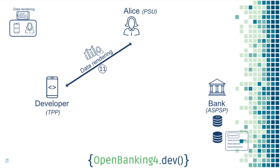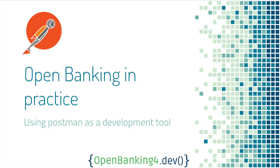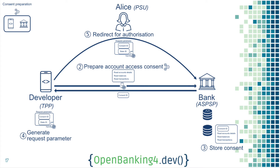Once you've got the data, you can do whatever you like — for example, data rendering like an aggregator, or any innovative idea that may not even involve presenting the data to Alice. Let's now see how it works with 4DropMobank, going directly to the consent preparation, since step one about Alice and the developer is really up to you.